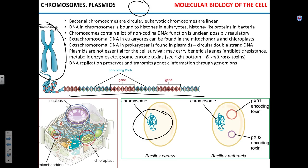DNA, both in bacteria, archaea, and eukaryotes, does not sit in its designated location by itself — it is actually coiled around proteins. In eukaryotes, those proteins are called histones. In archaea and bacteria they are called histone-like proteins or nucleoid-associated proteins. What could possibly be the function of those proteins?